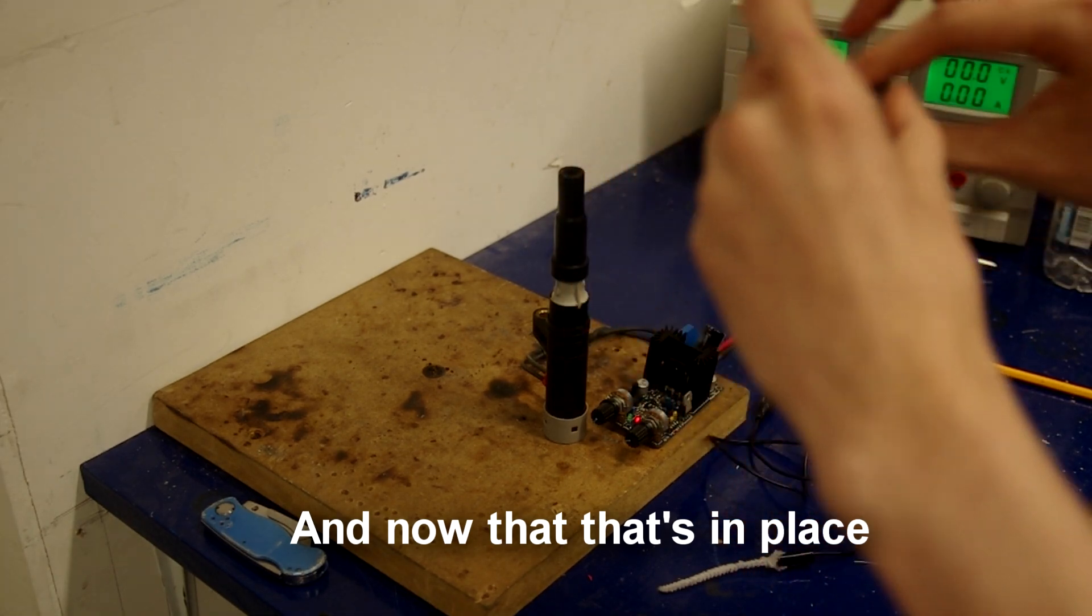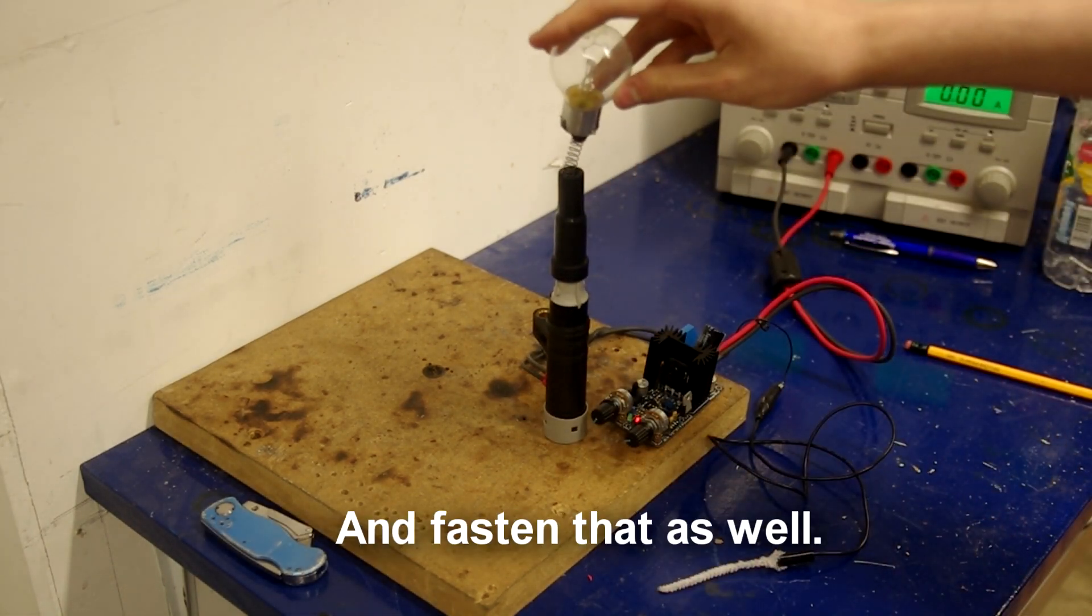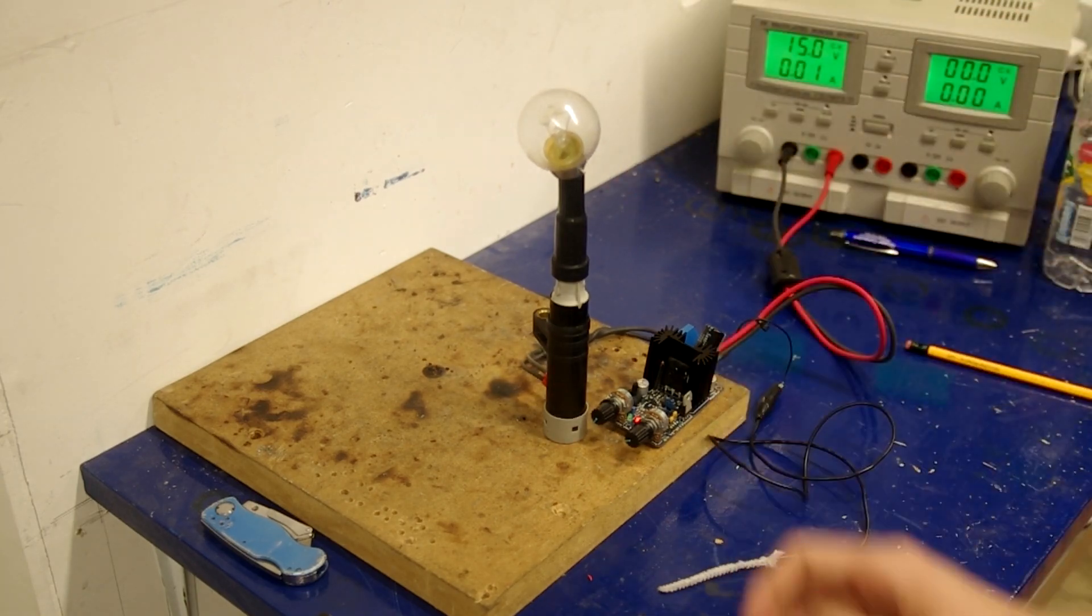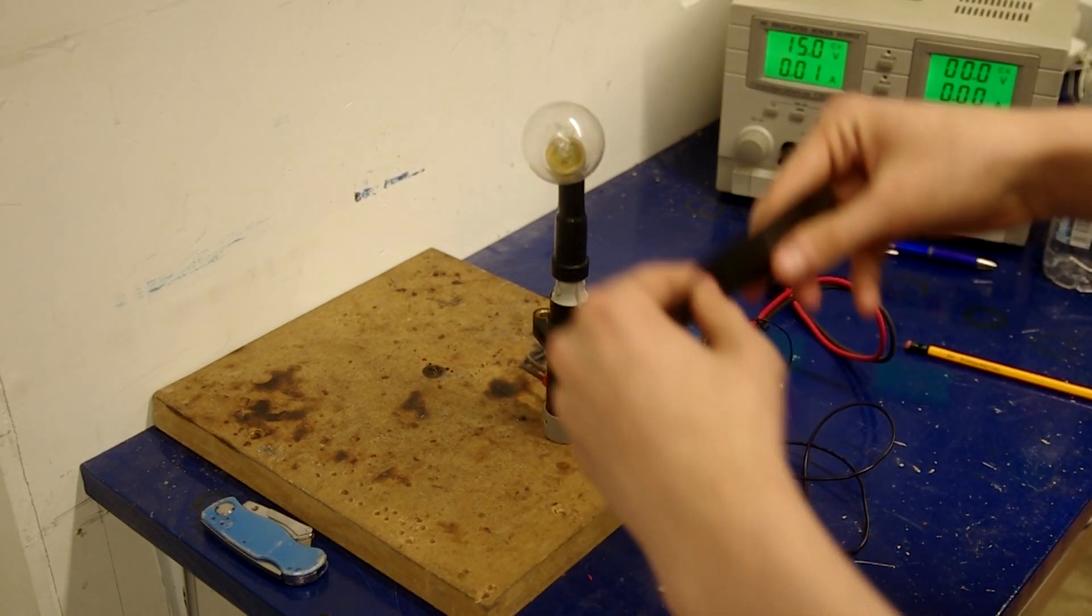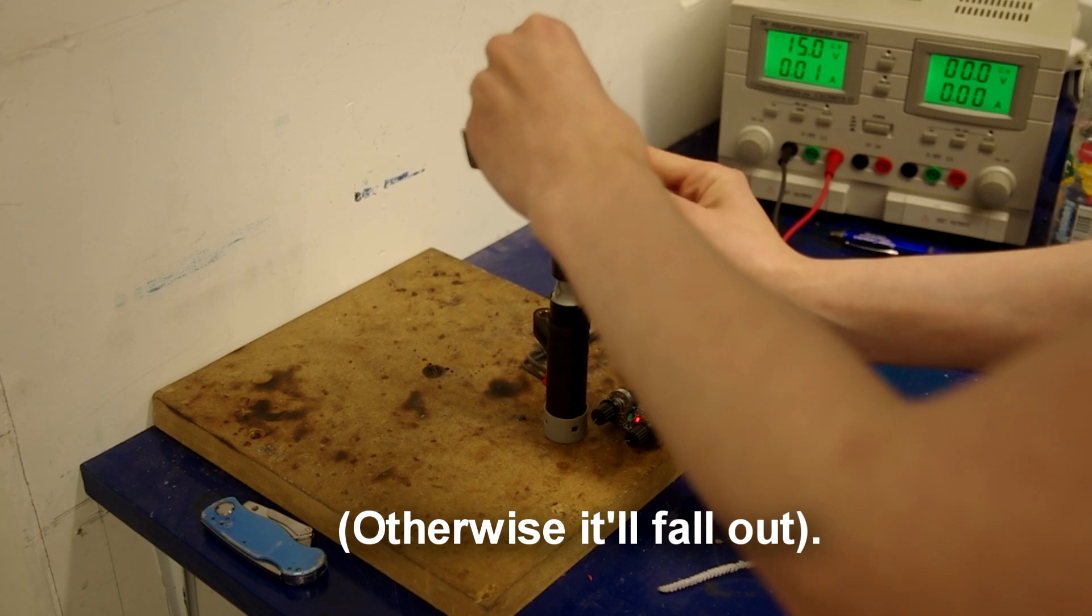Now that's in place you can put the spring into the spark coil and fasten that as well, otherwise it will fall out.